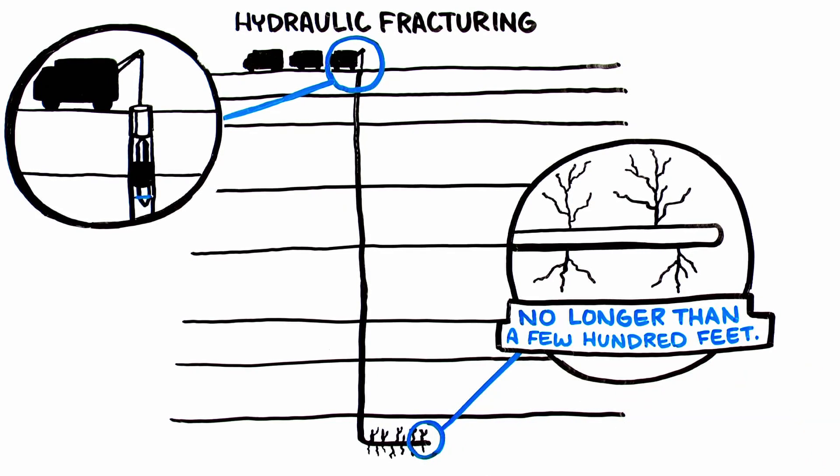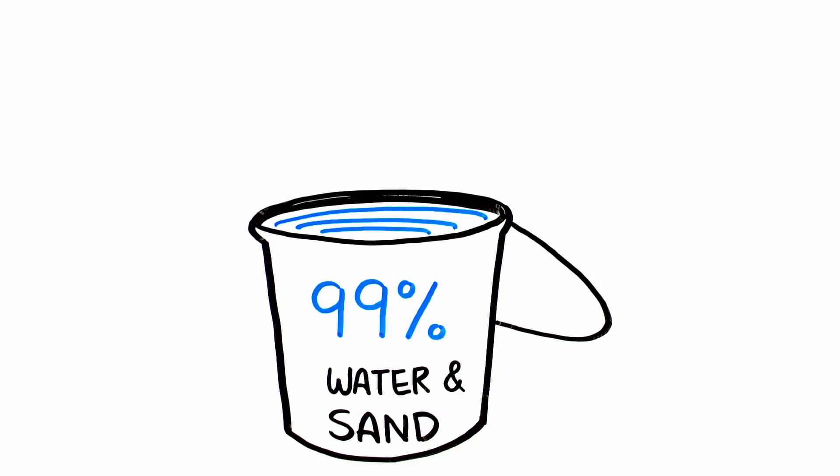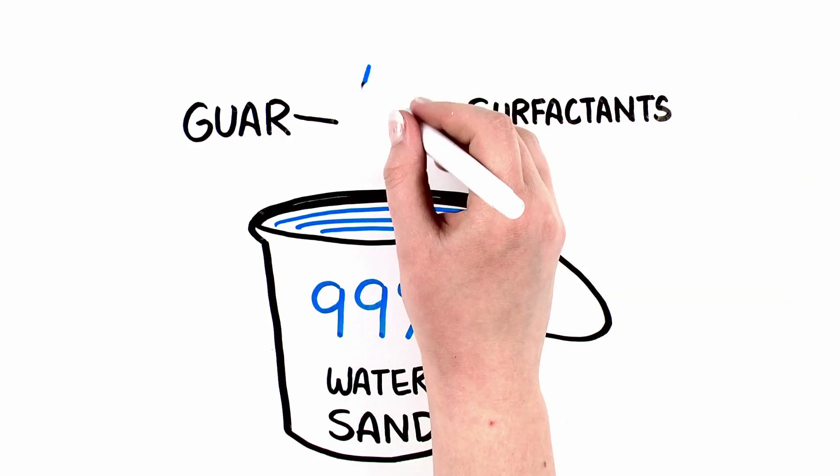These are thin hairline fissures that are typically no longer than a few hundred feet. The fluid is more than 99 percent water and sand. Additional additives in the fluid, such as guar and surfactants, are added to the mixture to enhance viscosity and keep the wellbore lubricated.